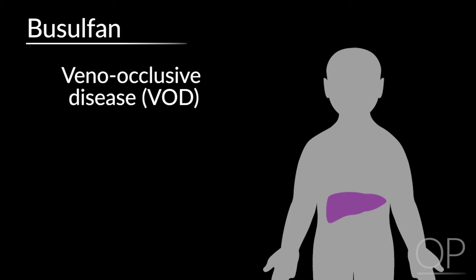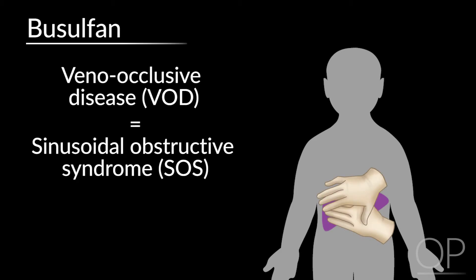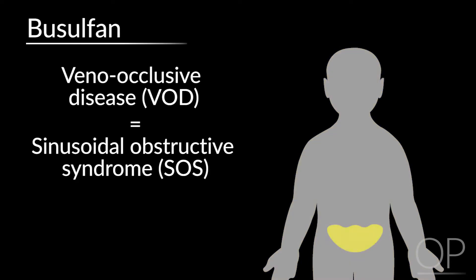While not suggested by this particular presentation, the other main side effect to think about with busulfan is veno-occlusive disease, also known as sinusoidal obstructive syndrome. This carries the triad of hepatomegaly associated with right upper quadrant tenderness, jaundice due to a direct hyperbilirubinemia, and ascites and weight gain with third spacing and decreased urine output.